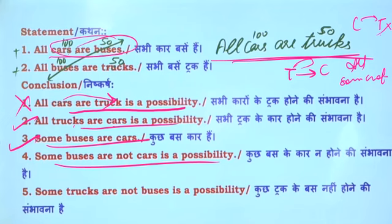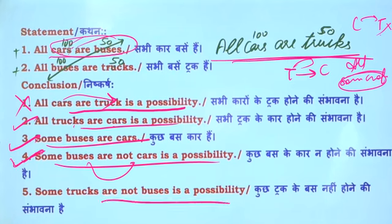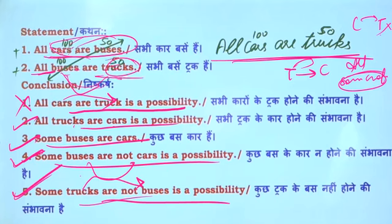Some buses are cars — in all cases, some buses are not cars. In the some-not case, it is correct. Some trucks are not buses — trucks and buses are correct. Some all-case is correct. Some trucks correct, A to B to A. Some-not case is correct, so the first case is correct. Cars and trucks are not a common term in one line, so it's called a statement when we check the possibility.